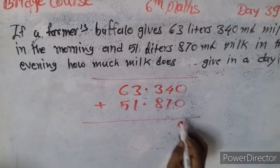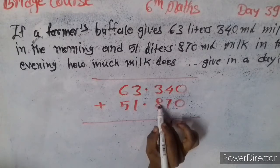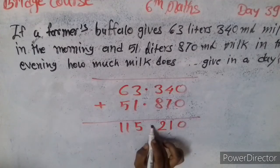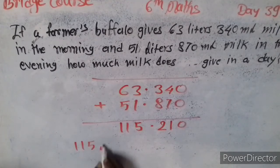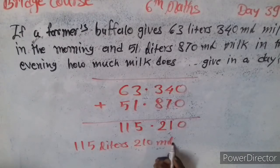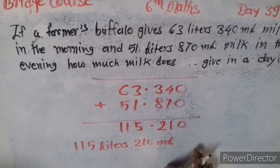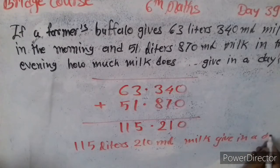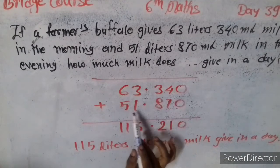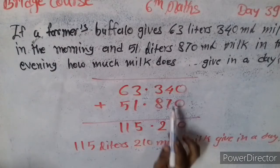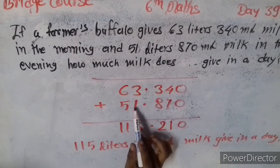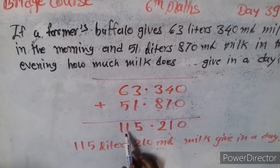Addition: 0 plus 0 is 0. 7 and 4 is 11, carry 1. 9 and 3 is 12, carry 1. 1 and 1 is 2. 2 and 3 is 5. 5 and 6 is 11, carry 1. So the answer is 115 liters 210 milliliters of milk given in a day.